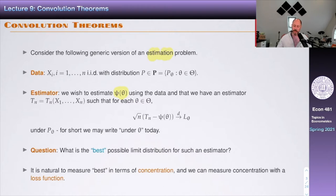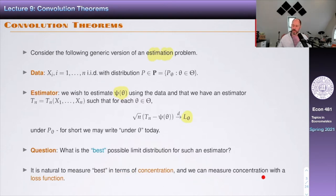The question is: what is the best possible limiting distribution for such an estimator? When you look at Lθ you ask yourself, what's good? It is natural to measure 'best' in terms of concentration, and we can measure concentration with a loss function.